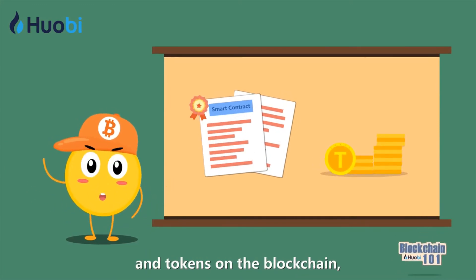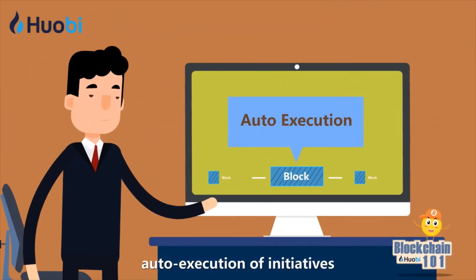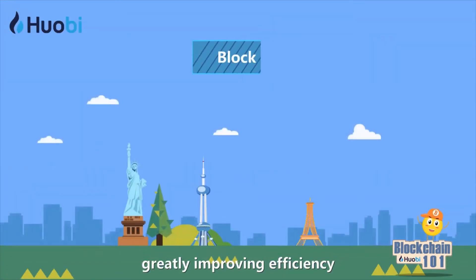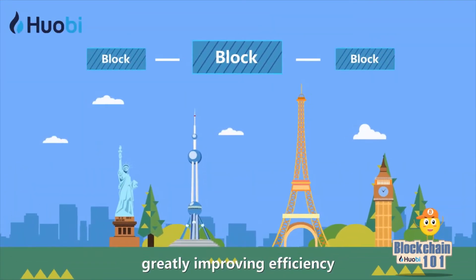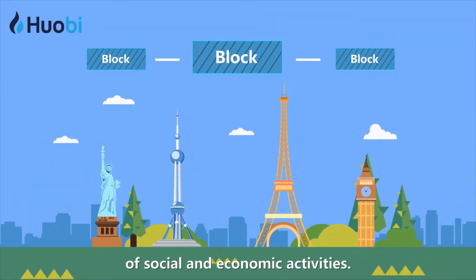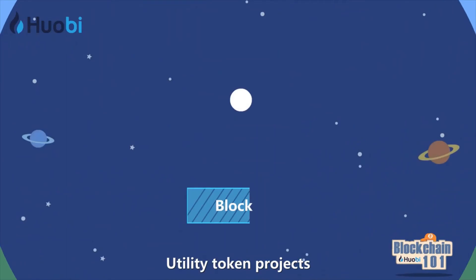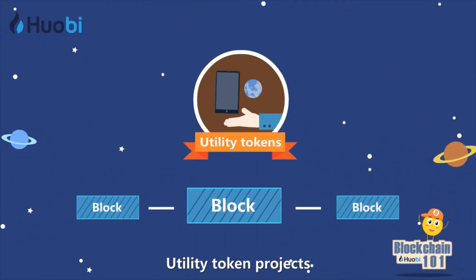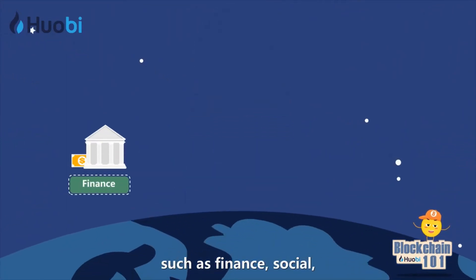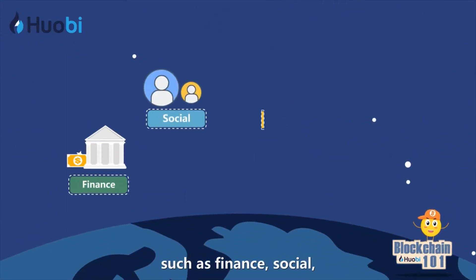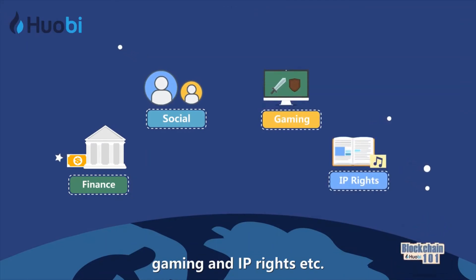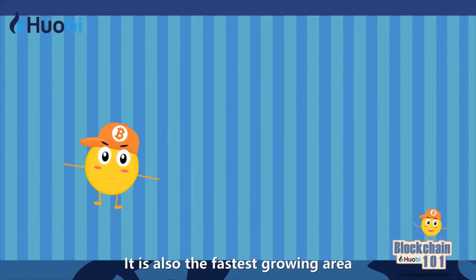Utilizing smart contracts and tokens in the blockchain, auto-execution of initiatives can be better implemented, greatly improving the efficiency of social and economic activities. Utility token projects encompass a wide range of fields such as finance, social, gaming, and IP rights.